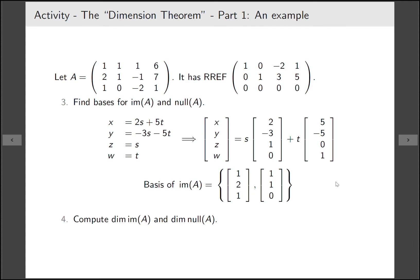Now we're ready to compute the dimension of both of these. In the first one we have two parameters so our dimension is 2. For the second one we have two elements of the basis so the dimension is 2. So both of these are 2.